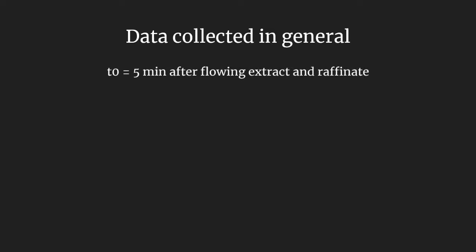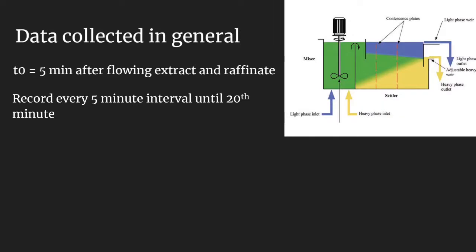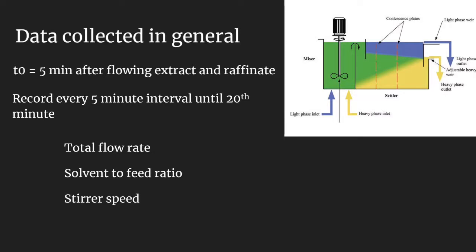Our group set the zero time as 5 minutes after letting the extract and raffinate flow first, to ensure the flow is in steady state. Then the data is recorded every 5 minutes until 20 minutes. In general, as the total flow rate, solvent to feed ratio, and stirrer speed increase, the extraction efficiency will increase as well. For your information, the data collected is in terms of refractive index, from which we calibrate the respective composition of acetone in the mixture.